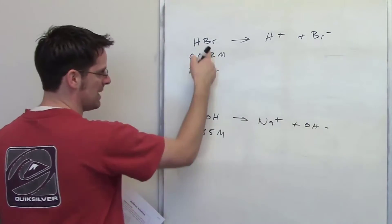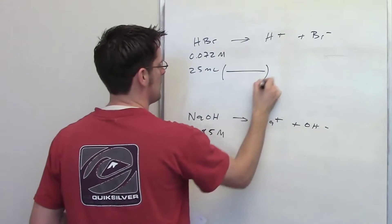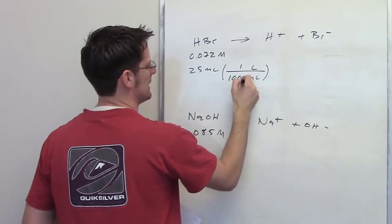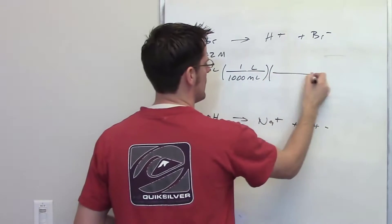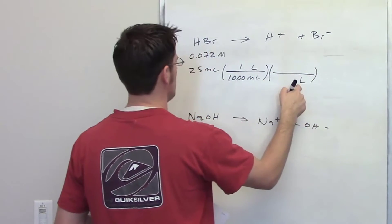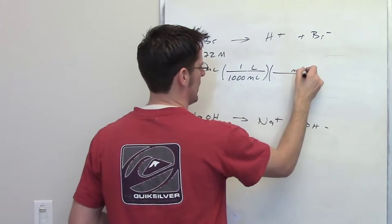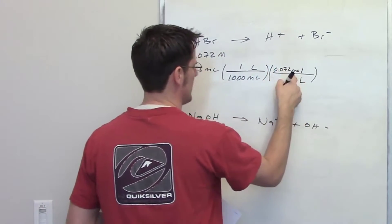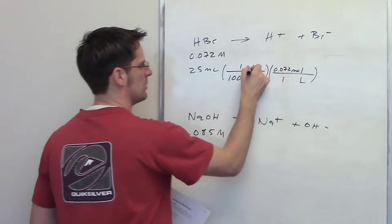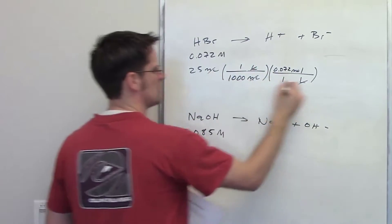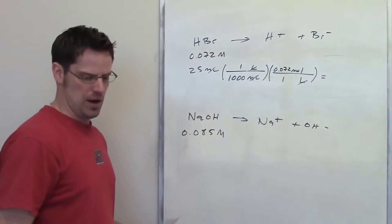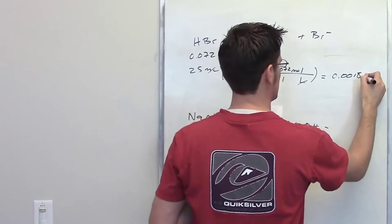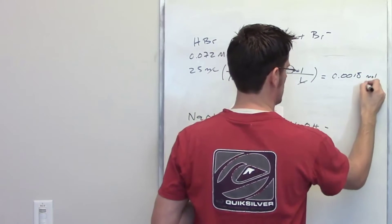I've got 25 milliliters of HBr. I'm going to convert milliliters to liters by remembering there's 1,000 milliliters in one liter. And then in the next set of brackets, I'll put liters in the denominator and moles in the numerator. For this particular solution, I have 0.072 moles of HBr in every one liter of HBr. The liters cancel each other out, the milliliters cancel each other out, and I end up getting a final answer of 0.0018 moles of HBr.